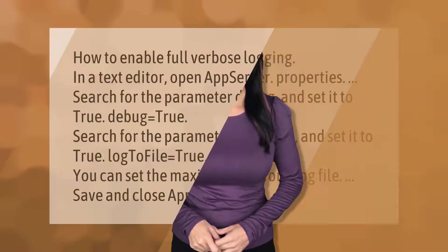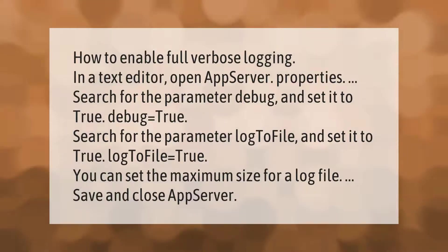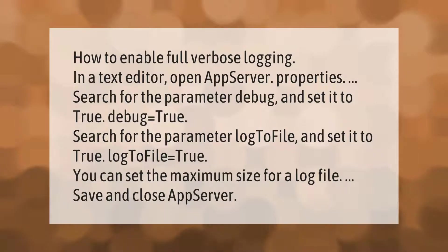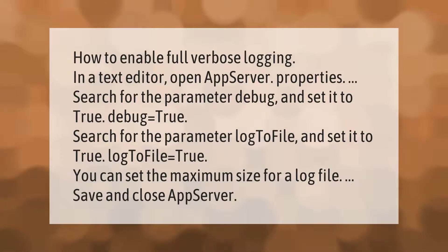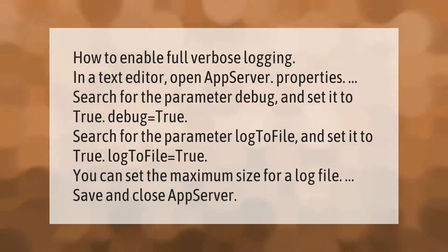How to enable full verbose logging in a text editor: open app server properties, search for the parameter 'debug' and set it to true — debug equals true. Then search for the parameter 'log to file' and set it to true — log to file equals true.